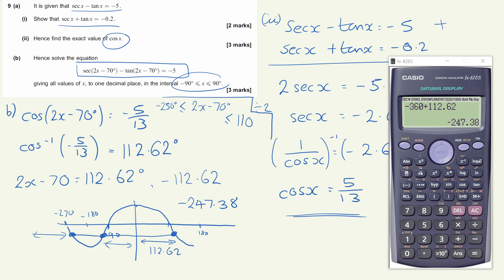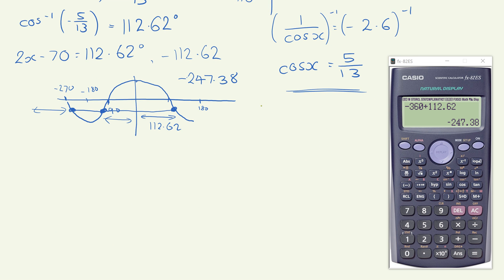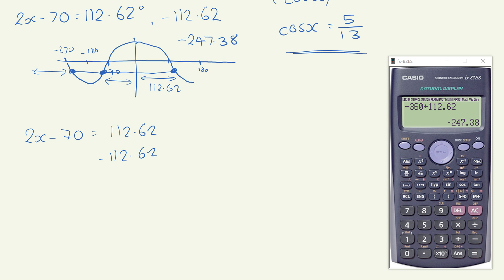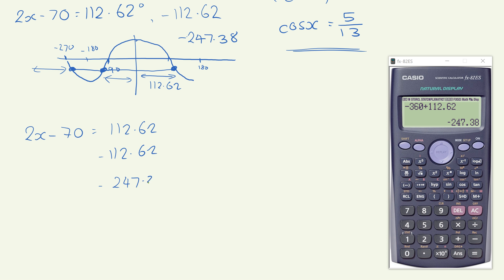So sorry it's a little bit messy, I'm just trying to keep it all on the one page for us. So those are our three solutions. So I'll just give us a bit more room now. So I've got 2x minus 70 is equal to 112.62, minus 112.62, and potentially this one which is just inside our range of 250, so I'm just highlighting that there, of minus 247.38. So to get these in terms of x, we're going to add 70 and divide by 2 to each one.